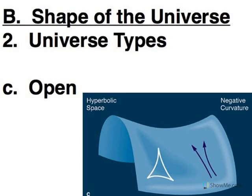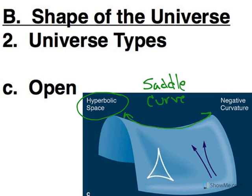An open universe. In an open universe, one way of picturing the shape is hyperbolic. This is sometimes called a saddle curve. And so this universe is curved two ways. It's got a curvature going that way and a curvature going this way. And that's one way of picturing an open universe.